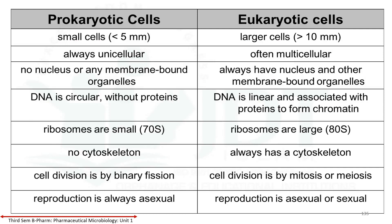Prokaryotics are small cells, less than 5 micrometers in diameter. Eukaryotic cells are larger cells, greater than 10 micrometers. Prokaryotics are always unicellular, while eukaryotics are often multicellular. In prokaryotics, there is no nucleus or any membrane-bounded organelles.